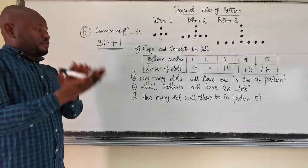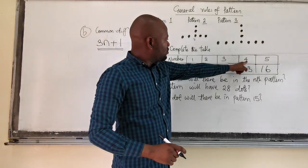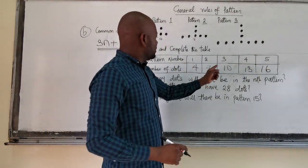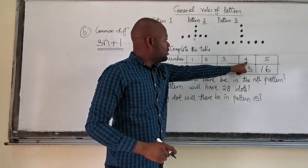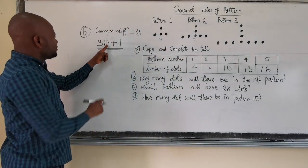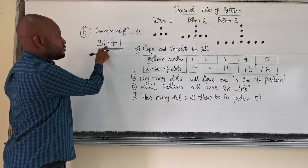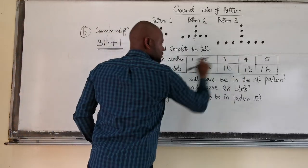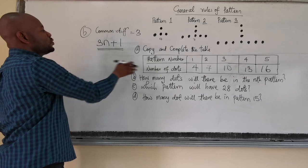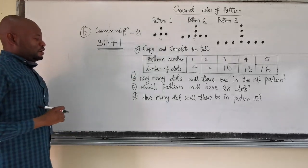So if you want to verify your answer, let's make use of pattern number 4. My N will be 4. 3 times 4 is 12 plus 1 is 13. So any of them, place it here, you will have the answer.